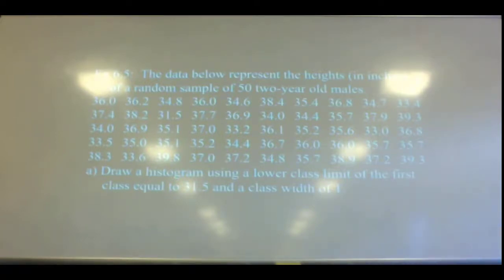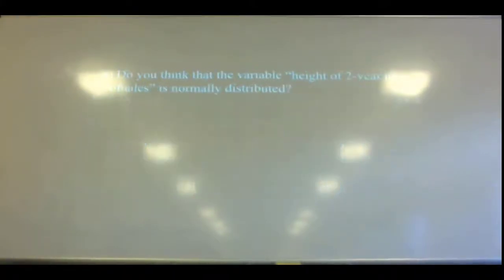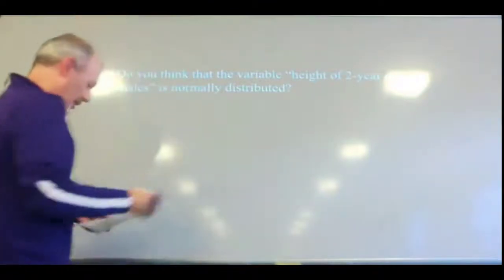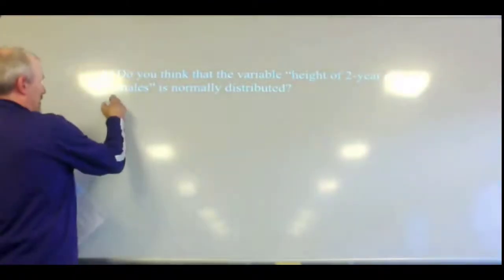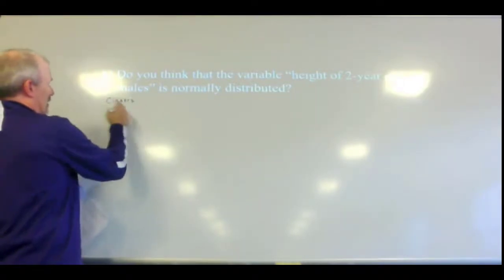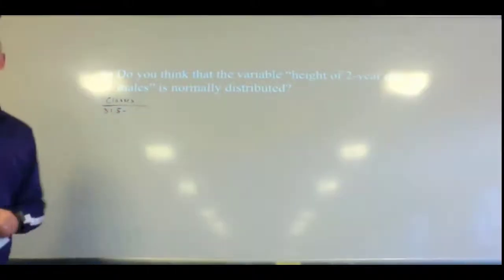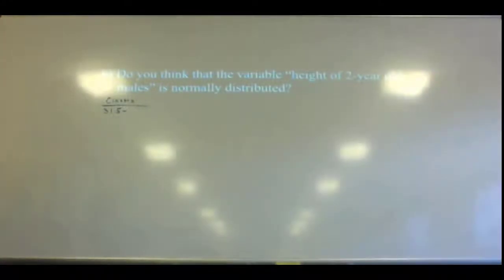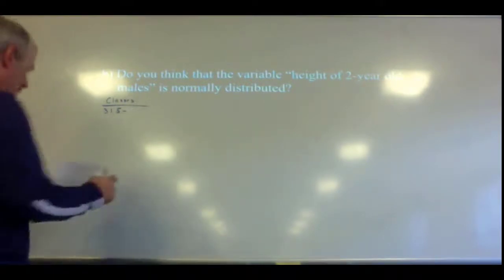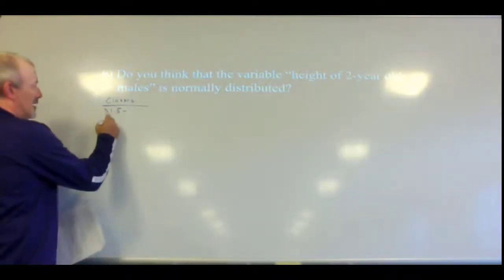Draw a histogram using a lower class limit of the first class equal to 31.5 and a class width of one. This is some review of something we did a couple of chapters ago. Our lower class limit was supposed to be 31.5. The class width tells us how far we have to go to get to the next lower class limit. So the next lower class limit, if our class width is one, is going to be 32.5.